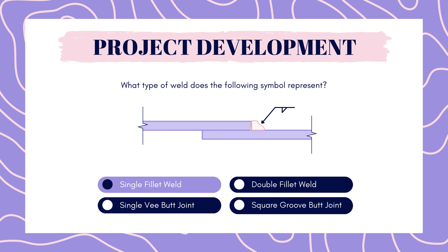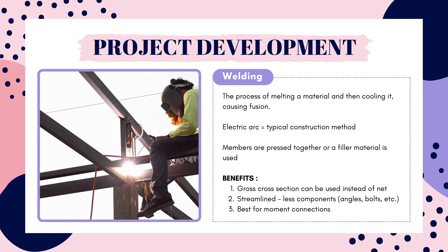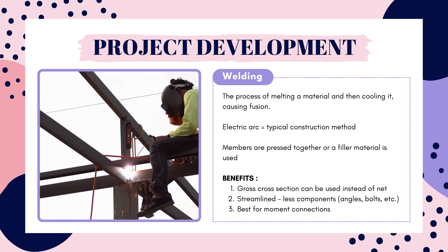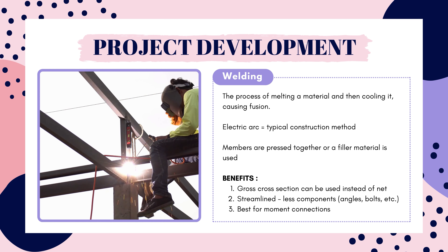The answer is single fillet weld. Before we dive into weld types, let's talk about what welding is and the benefits. Welding is the process of melting a material and then cooling it to cause fusion. In construction, an electric arc is typically used as the heat source. Once the materials are melted, they are brought together to form a joint — sometimes simply pressed together, other times a filler material is used. Welds are often used instead of bolts because they allow the gross cross section of a member to be used instead of the net section, making structural calculations simpler. They're also more streamlined since there are no angles, bolts, or washers needed and no clearance for wrenches. And finally, they are best for moment connections.